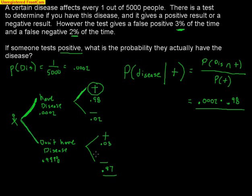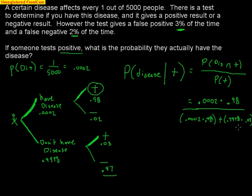There's the branch where you don't have the disease, and then you come to the positive result here. So there are two ways that could happen. On the bottom of this fraction, we need parentheses because there are a couple of options. The first option is you have the disease and positive — .0002 times .98 — and there's another option: you don't have the disease, .9998, times positive result, .03.